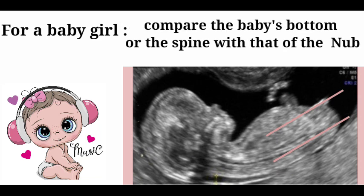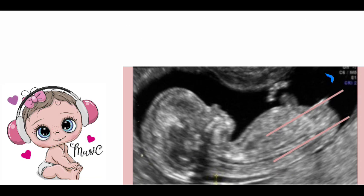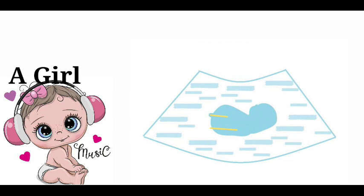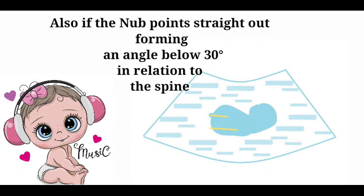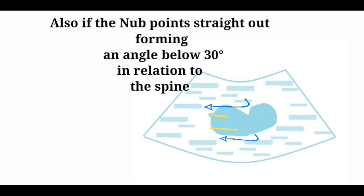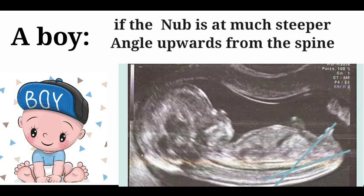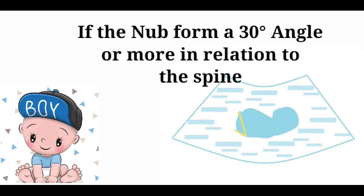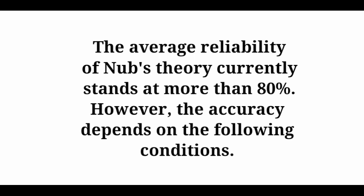If your baby is a girl, compare the angle of your baby's bottom or spine to the angle of the nub. If it sits horizontally in line with the spine or points down towards it, your baby is a girl. Also, if the nub points straight out forming an angle below 30 degrees in relation to the spine, it's a girl. For a baby boy, if the nub is at a much steeper angle upwards from the spine, or forms a 30-degree angle or more in relation to the spine, it's a boy.